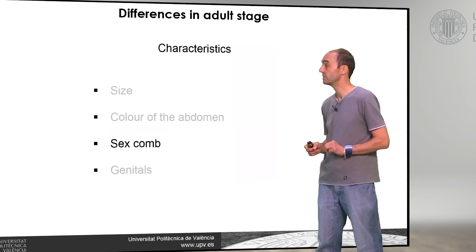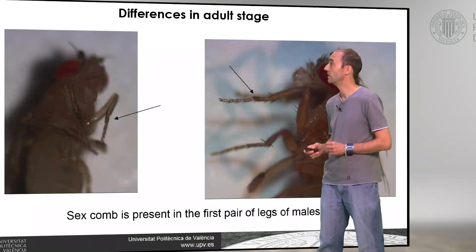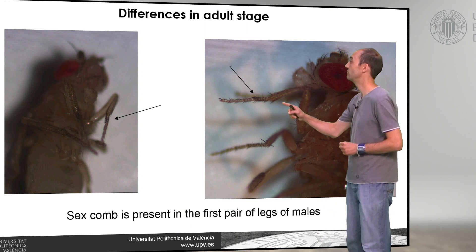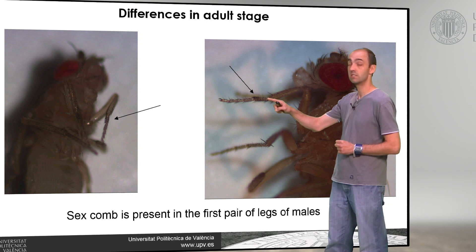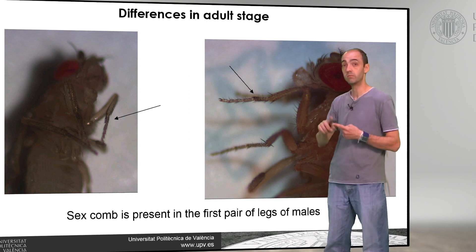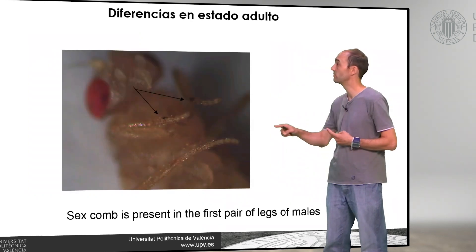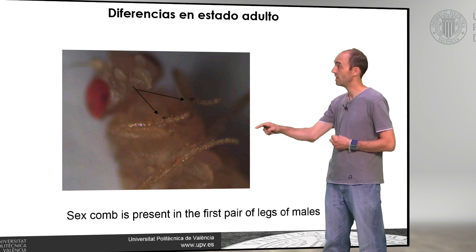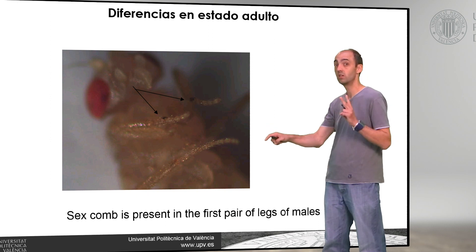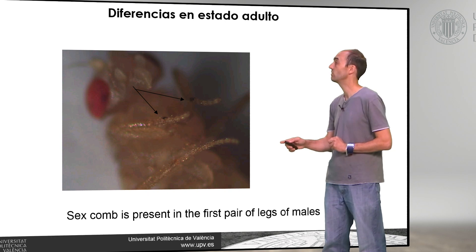The third difference is the sex comb, called in Spanish 'cerco sexual' or 'peine sexual.' Here we can see the first pair of legs, and in that first pair of legs we can see a black dot — that is the sex comb. It only appears in males and only on the first pair of legs. In this other picture we can again see the two black dots that form the sex comb, and we cannot see them on the second pair of legs. Males have the sex comb; females do not.